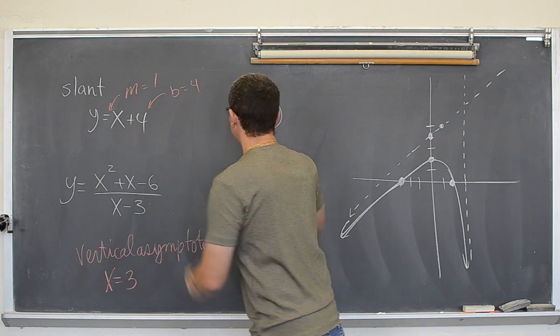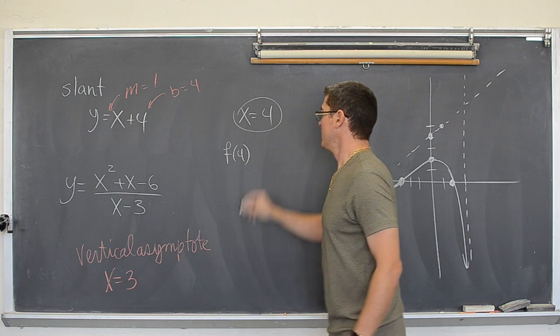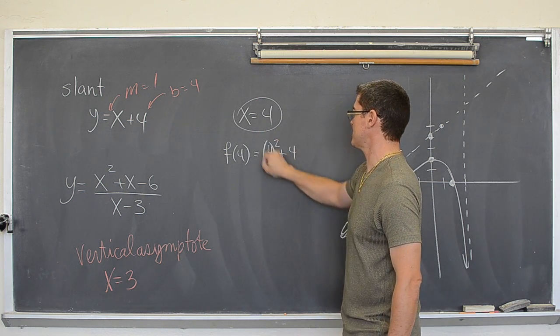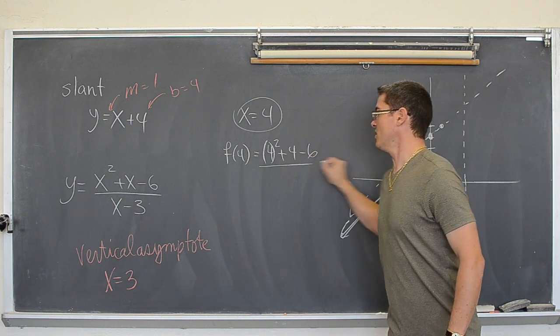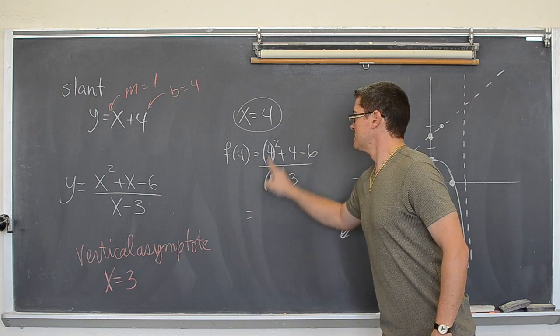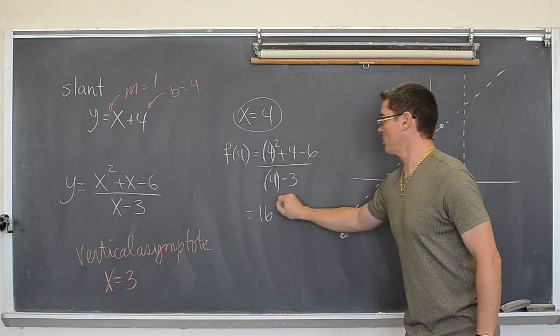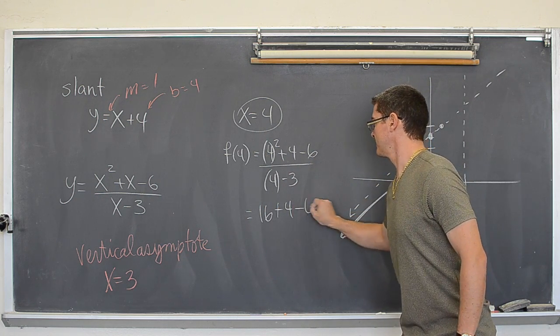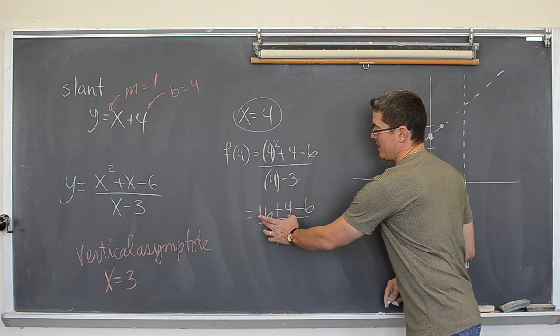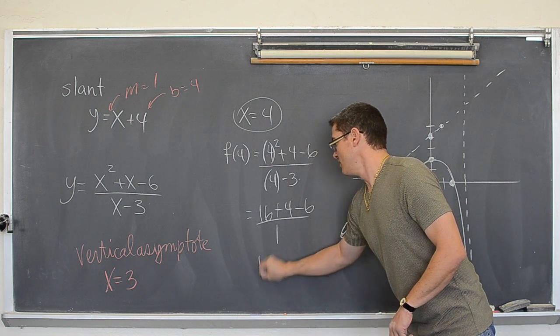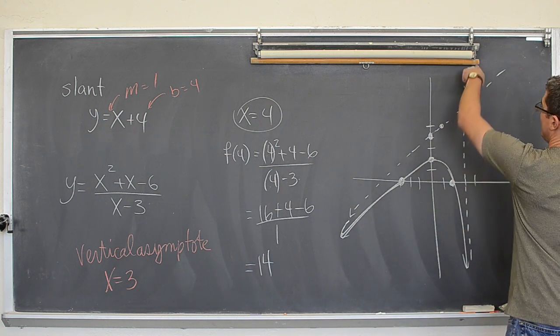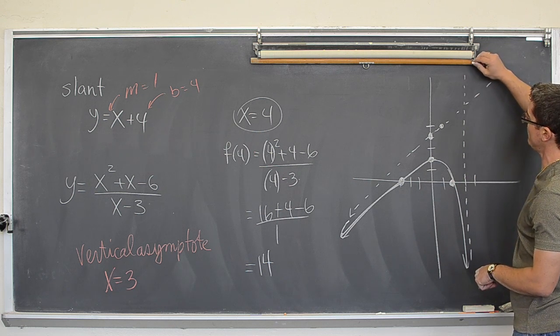So, we get f of 4 is equal to 4 squared plus 4, minus 6 over 4 minus 3. Well, that is going to be 16 plus 4 minus 6 over 4 minus 3, which is 1. So, that is 20. 20 minus 6 is 14. So, at x equals 4, we are all the way up at 14. So, we are way, way up here.